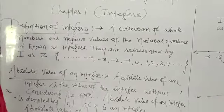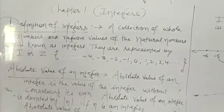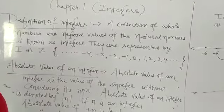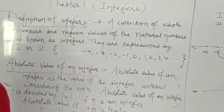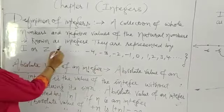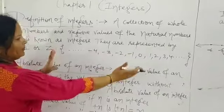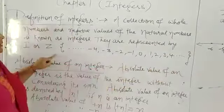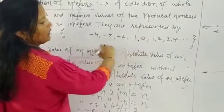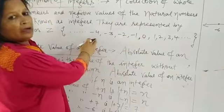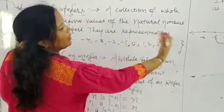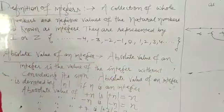The definition of integer: a collection of whole numbers and negative values of natural numbers is known as integers. They are represented by capital I or capital Z. When we write the set, 0 is in between. From 0 to the left side, we write the negative values of the natural numbers, and to the right of 0, we write all the whole numbers.